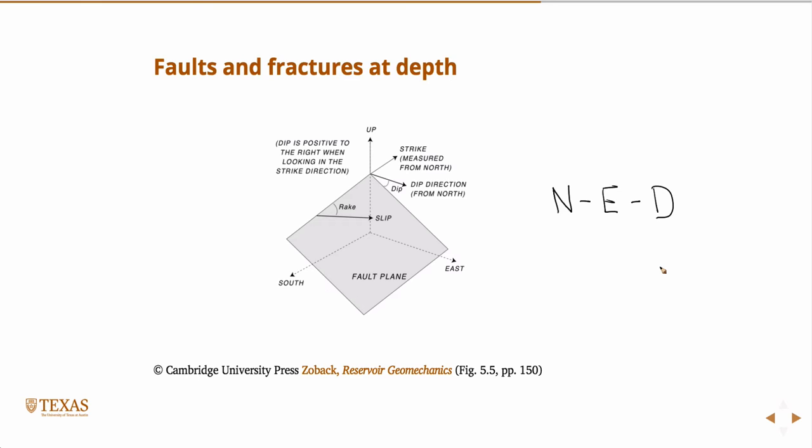Remember right-handed coordinate frames from statics? If I stick my fingers, take your right hand, and stick your fingers in the direction of north, and I want to curl my fingers to the east. If I just curl my fingers like that, I'm pointing west. So I really need to turn my hand over. Stick my fingers in the direction of north, curl my fingers to the east, and my thumb points in the direction of down. So I have a right-handed coordinate frame. That's how you do cross products. Take your right hand, I cross J, and your thumb is pointing in the direction of K. So the same thing here. We want a right-handed coordinate system. We're going to use north, east, and down.